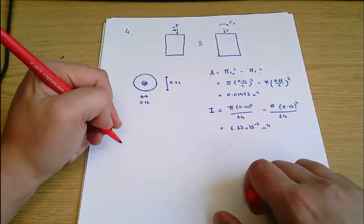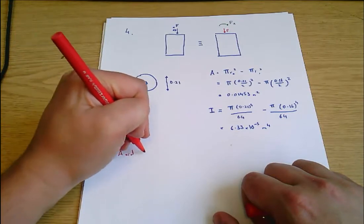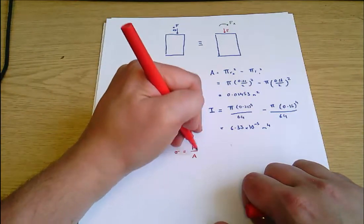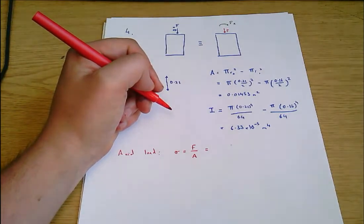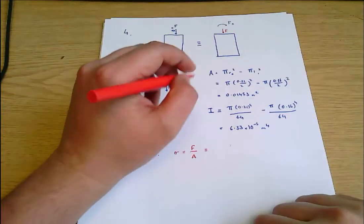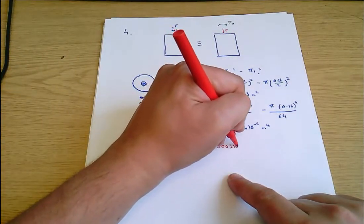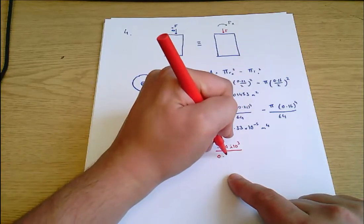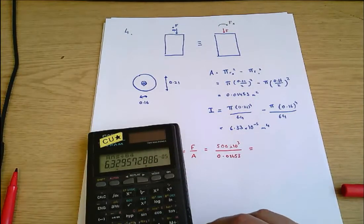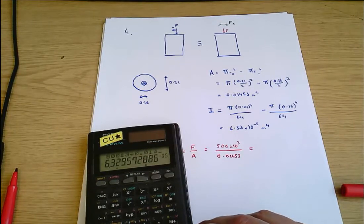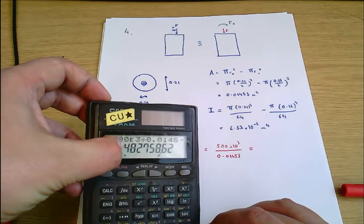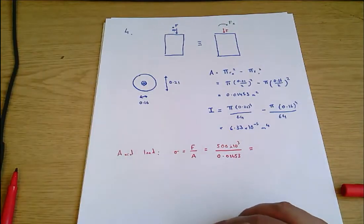And now we treat the axial load and the bending moment separately at first. The axial load leads to a stress which is just force over area. And force we know from the question is 500 kilonewtons. 500 times 10 to the 3 newtons. And area we know is 0.01453 square meters. So 500 times 10 to the 3 divided by 0.01453, that comes out as 34.5 megapascals to 3 significant figures.